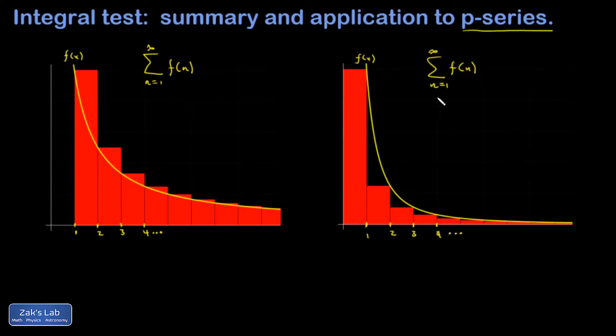What I have here is a comparison of the two different types of integral tests. In the first one, I have some series n equals 1 to infinity of f of n. And I suspect for one reason or another that it diverges. So what I've done is set it up so that the area of these rectangles represents the series and it's above a curve for the function f of x that I suspect will have an area that integrates to infinity.